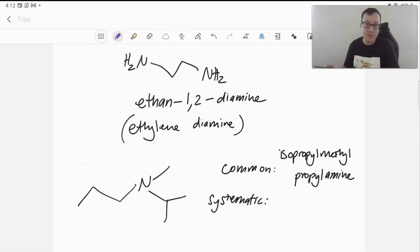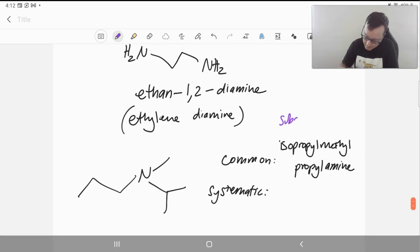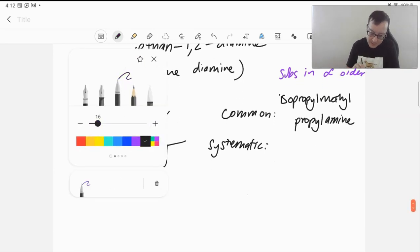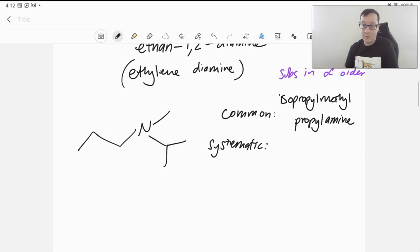So, just like with ethers, we had like methyl ethyl ether, or something like that, or methyl ethyl ketone. With common names, you can kind of just throw the substituents out there. Alphabetical order of substituents. For a systematic name, you will need to find your longest chain, which will be the propyl chain.